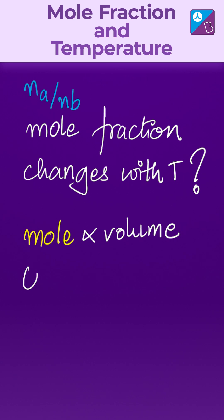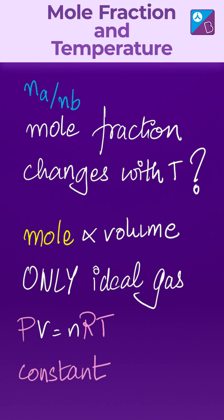Moles are proportional to volume only and only for ideal gases when PV equals nRT, or where PRT is constant - Avogadro's law.